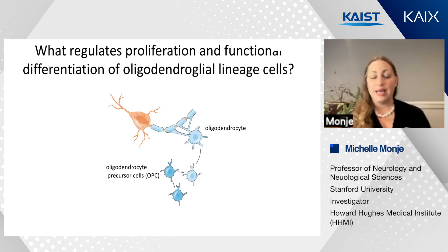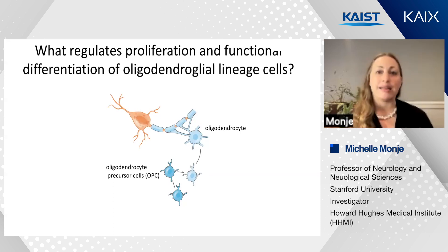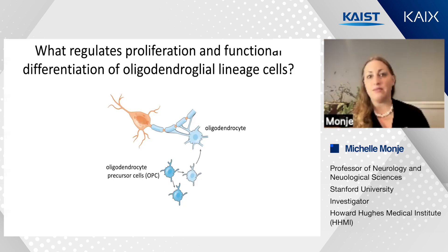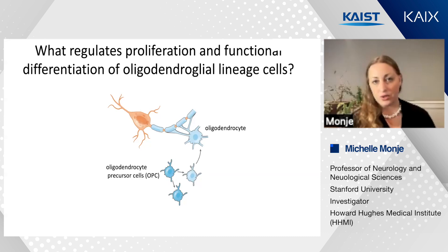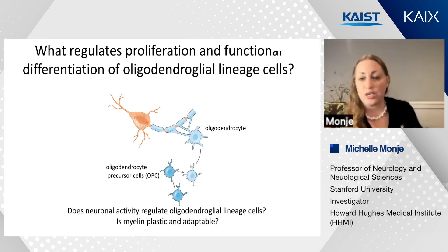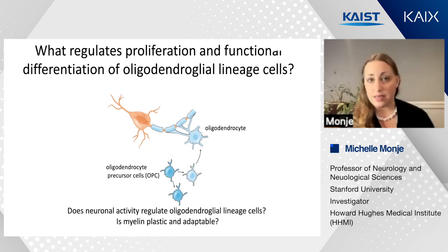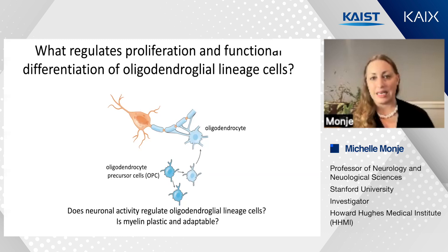An oligodendrocyte will myelinate any appropriately sized fiber in a petri dish—if you put in an inert nanofiber or a formalin-fixed axon, an oligodendrocyte in vitro will myelinate that. So there are clearly activity-independent modes of myelination. But the extent to which this baseline level of myelination may be modulated in an experience- and activity-dependent way was something I was really fascinated by, and something that early in my own independent laboratory we sought to answer: does neuronal activity regulate oligodendroglial cells, and would myelin be plastic and adaptable?